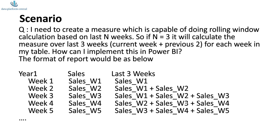Sales corresponding to each week will be shown, and alongside that, the last 3 weeks measure will calculate sales from the previous 3 weeks. So for week 4, it will consist of week 2 plus week 3 plus week 4. Similarly for week 5, it will consist of week 3 plus week 4 plus week 5. Let's see how we can implement such a rolling window calculation based on week inside our Power BI report.